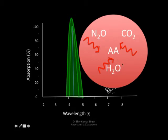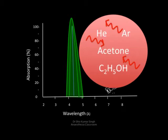Water is present in abundance in our breath, and that's why there is a chamber which collects the water before it reaches the analyzers, removing it from the measurement. But it's not just infrared-absorbing substances that can cause collision broadening — non-infrared absorbing substances like helium, argon, acetone, and alcohol can also affect these measurements.